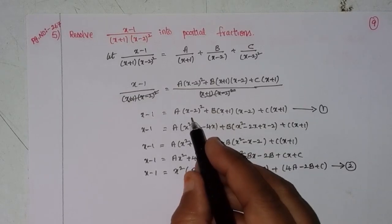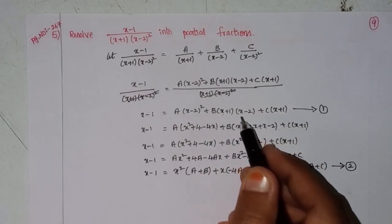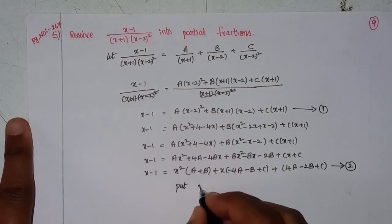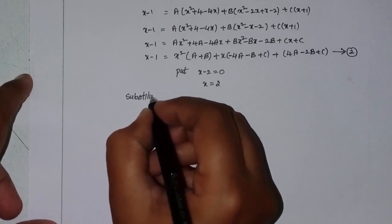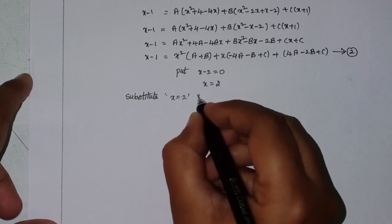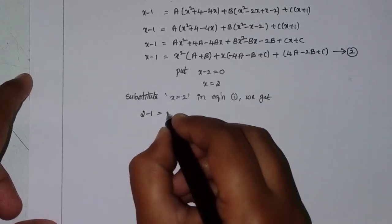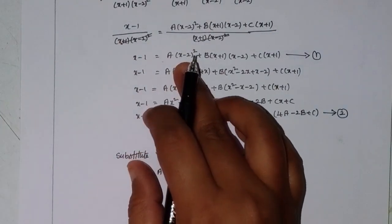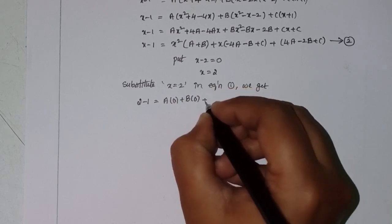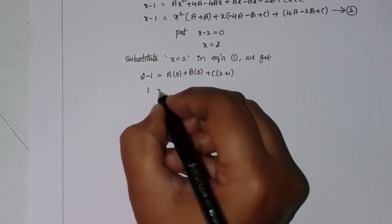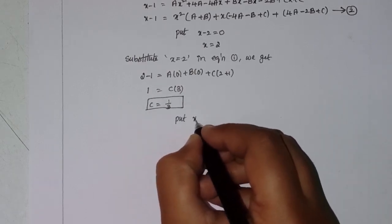Put x minus 2 equal to 0, so x equals 2. Substitute x equals 2 in Equation 1: 2 minus 1 equals A into 0 plus B into 0 plus C into (2 plus 1). So 1 equals C into 3, therefore C equals 1 by 3.